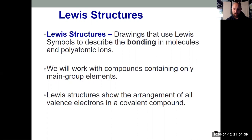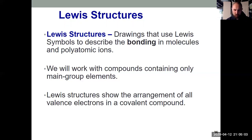In the previous video, we looked at Lewis symbols, which are just for individual atoms or ions. Now in a Lewis structure, we're showing bonding and electron activity in both molecules and polyatomic ions. For Gen Chem 1, we're focusing only on compounds with main group elements — really just groups 13 through 18. When we draw a Lewis structure, we show the arrangement of all valence electrons belonging to all atoms in that covalent compound.